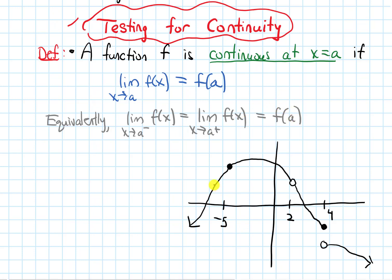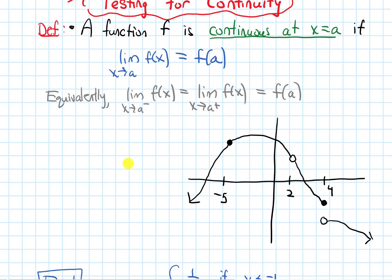Let's look at this based off of the graph below. I want to look at the x values at negative 5, at 2, and at 4. At x equals negative 5, the limit as x approaches a from the left and from the right exists, and it equals f of a — the y value of the function at this point. So this is continuous at x equals negative 5.